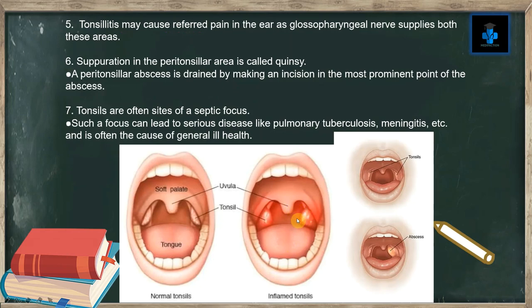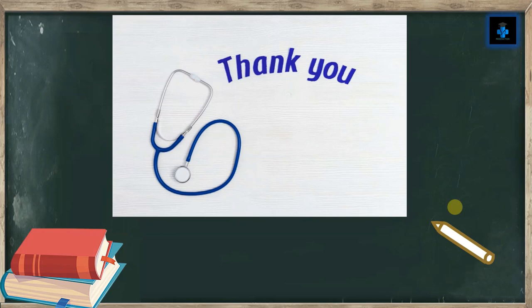Suppuration in the peritonsillar area is called quinsy. The peritonsillar abscess is drained by making an incision at the most prominent point of the abscess. Tonsils are often sites of a septic focus; such a focus can lead to serious diseases like pulmonary tuberculosis, meningitis, etc., and is often the cause of general ill health. Like, subscribe, and press the bell button for more videos.